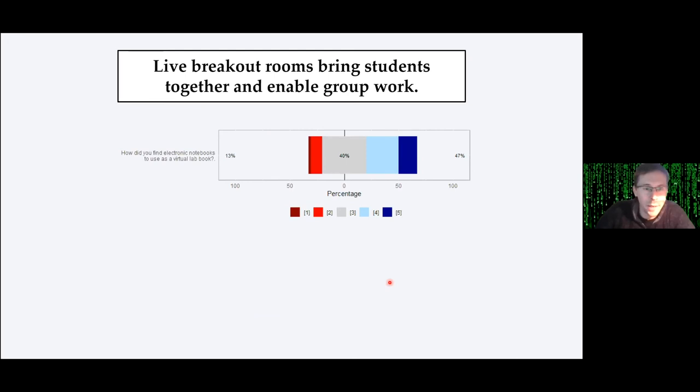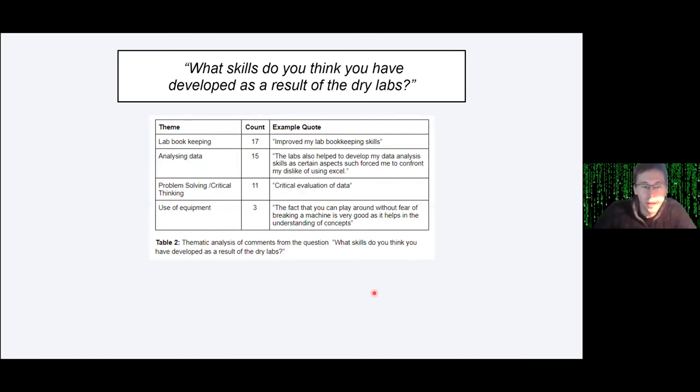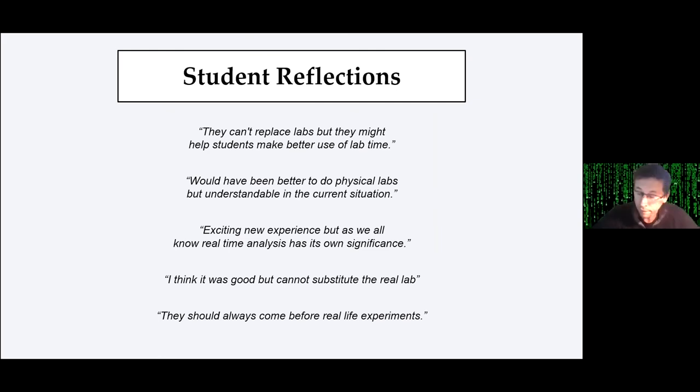The electronic lab books were a little bit marmite. I think this is because the OneNote that we're using was running from a cloud server. I picked OneNote because we had a site license for it. But when you're uploading and downloading large images over shaky Wi-Fi connections, it can be a little bit frustrating. So electronic lab books, somewhere in the middle. The students, without prompting in an open text response question, pulled back the learning objectives of the lab, saying they were able to keep lab books, analyze data, do problem solving and use equipment. So we were pleased about that. They recognized the skills that the virtual labs were giving them.